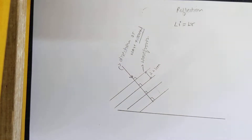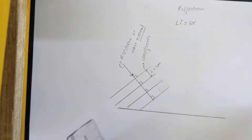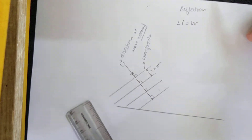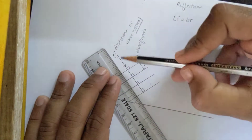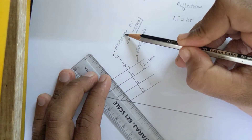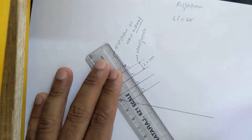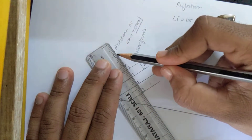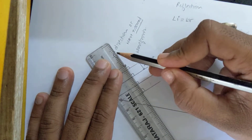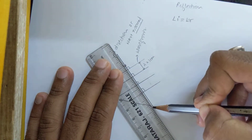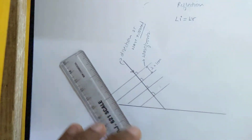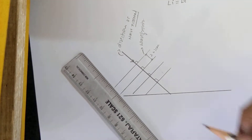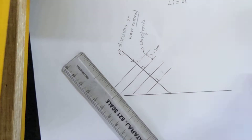Now that the terms are done, we will move on with the diagram. The first thing is to check the angle of incidence. For that, you need to treat your wave normal — also known as the direction of the wave — as the incident ray. You will extend this until it hits or meets the interface. This is your first step, and this point is your point of incidence.